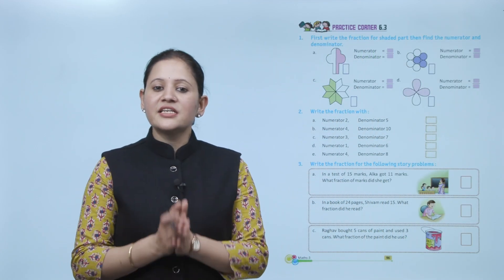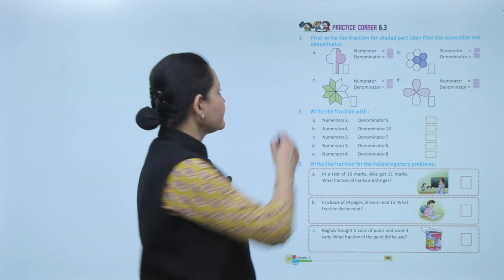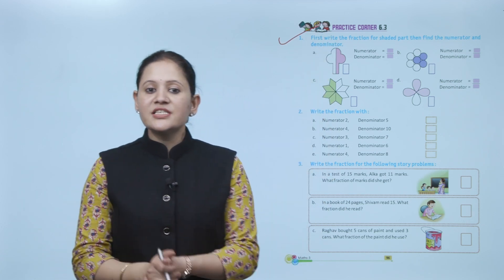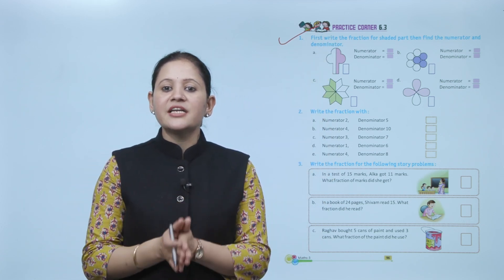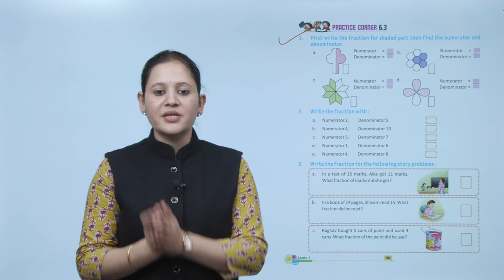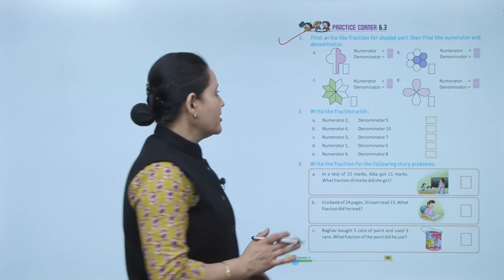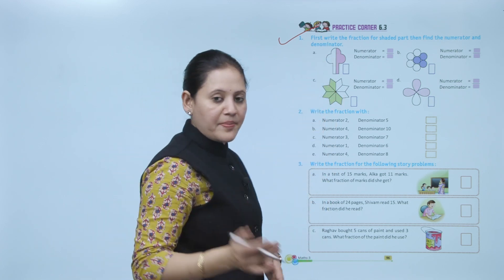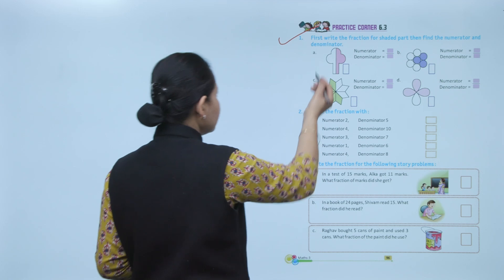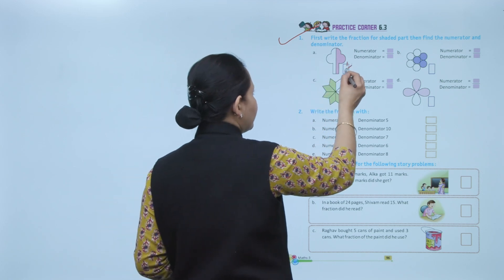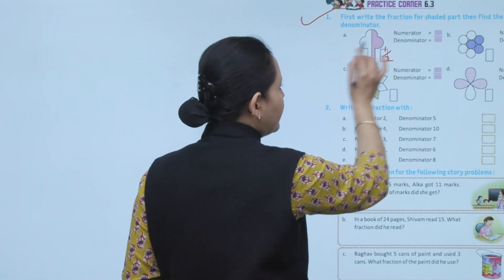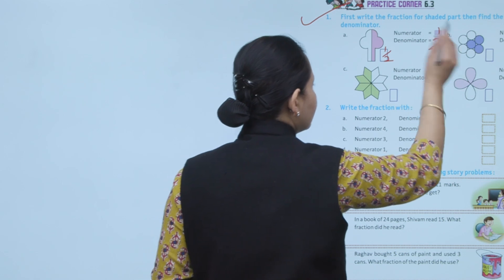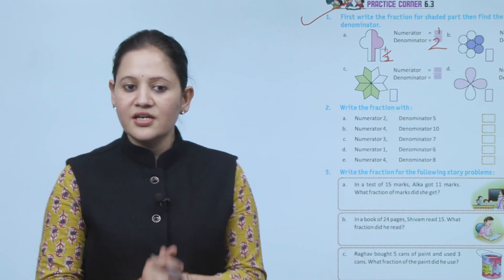Next, practice corner 6.3: write the fraction for the shaded part and then find the numerator and denominator. Here the figure is divided into 2 equal parts and 1 part is shaded, so it represents 1 by 2. The numerator — the upper part — is 1, and the denominator is 2.